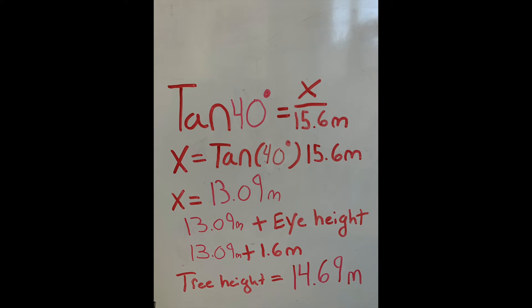This is the equation that we're going to use to solve for x. Tan 40 degrees equals x over 15.6 meters. 40 degrees is the angle that we just calculated and 15.6 meters is the distance from where we're standing to the base of the tree.